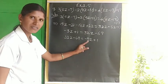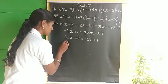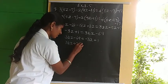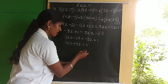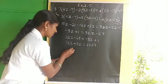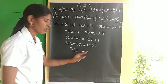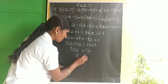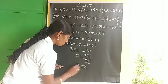Therefore z equals 70 divided by 35, which equals 2. So the z value is 2.